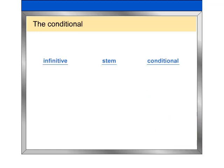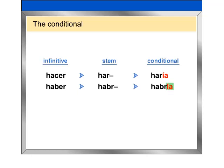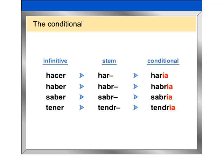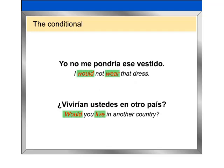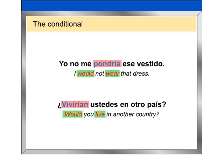Now, repeat these irregular forms after me. These are just a few examples of verbs with irregular stems in the conditional. While in English the conditional is a compound verb form made up of the auxiliary verb 'would' and a main verb, in Spanish it is a simple verb form that consists of one word.